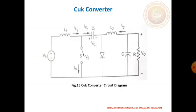Next topic: Cuk converter. In general, the Cuk converter reduces the switching component of the input and output current. This is achieved by using inductors in series with both the input and output. Two inductors, L1 and L2, are connected in series with the input and output to the load.